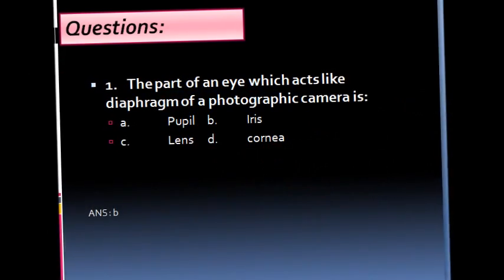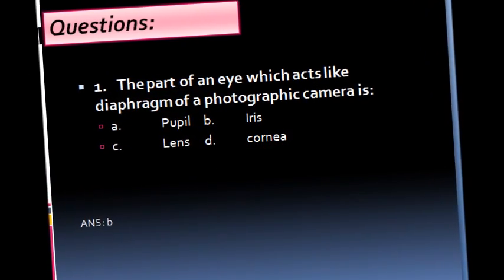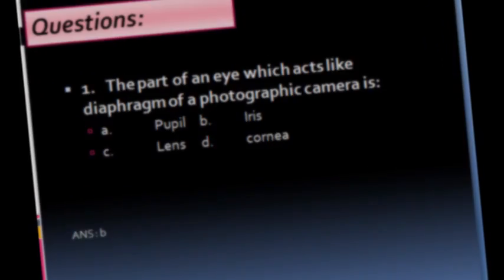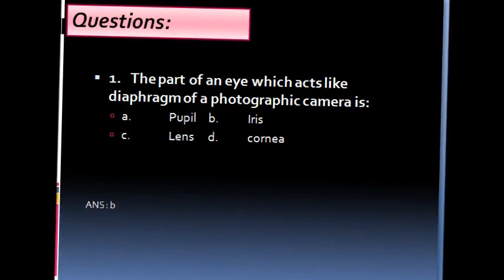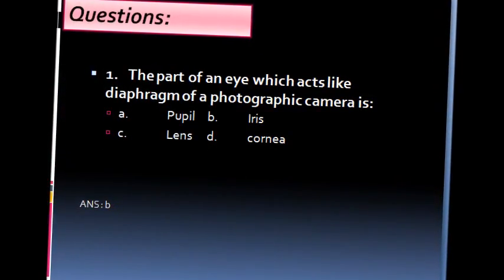Questions. The part of an eye which acts like diaphragm of a photographic camera is: a. Iris, b. Lens, c. Cornea.